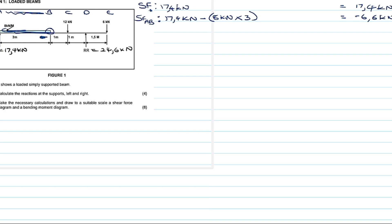Shear force at point C: we take the answer from the previous result, which was minus 6.6 kilonewtons. At point C there is a 12 kilonewton force acting downwards, so we subtract 12. Shear force at C = minus 6.6 minus 12 = minus 18.6 kilonewtons.